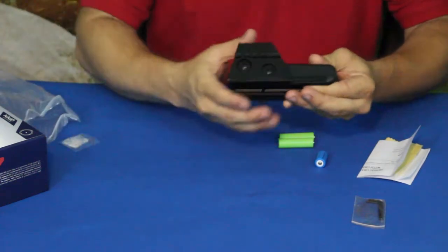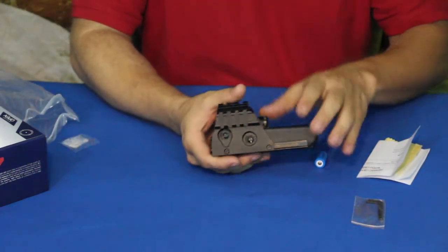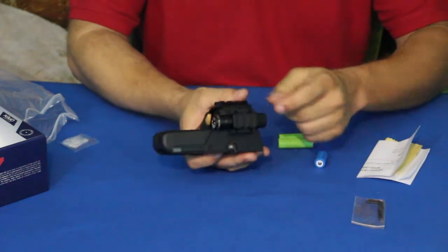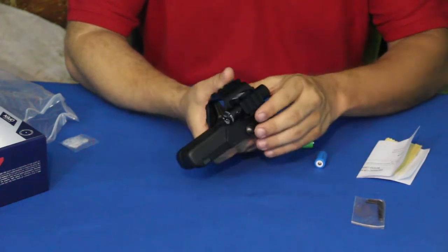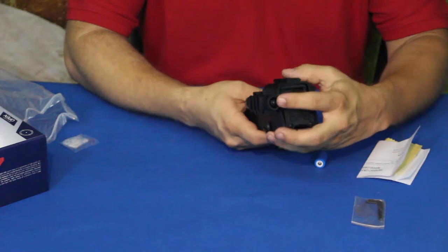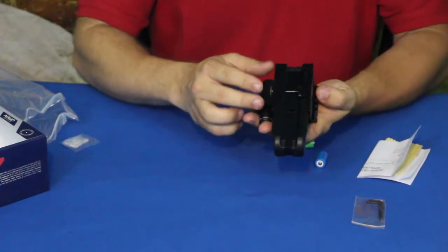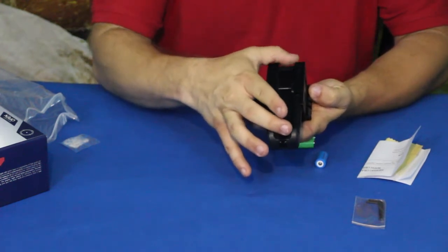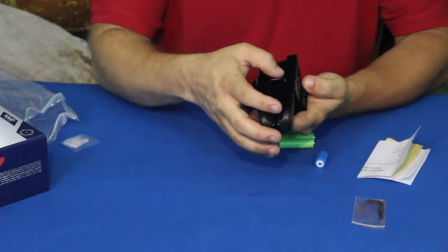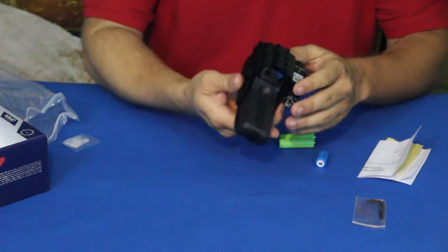You don't just have the reflex sight, which would be this section right here - it also comes with a laser. You have a push-button laser that you turn on and off, and this would go on a standard mount like a Picatinny or Weaver rail.